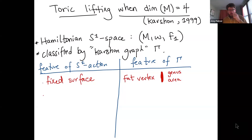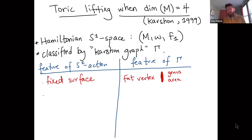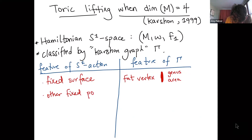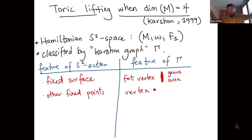Every fixed surface of the S^1 action corresponds to a fat vertex of the graph, labeled with the genus of that surface and its symplectic area. Every isolated fixed point is represented by a regular vertex. These are the two types of fixed sets: either an entire surface is fixed, or a single isolated point.